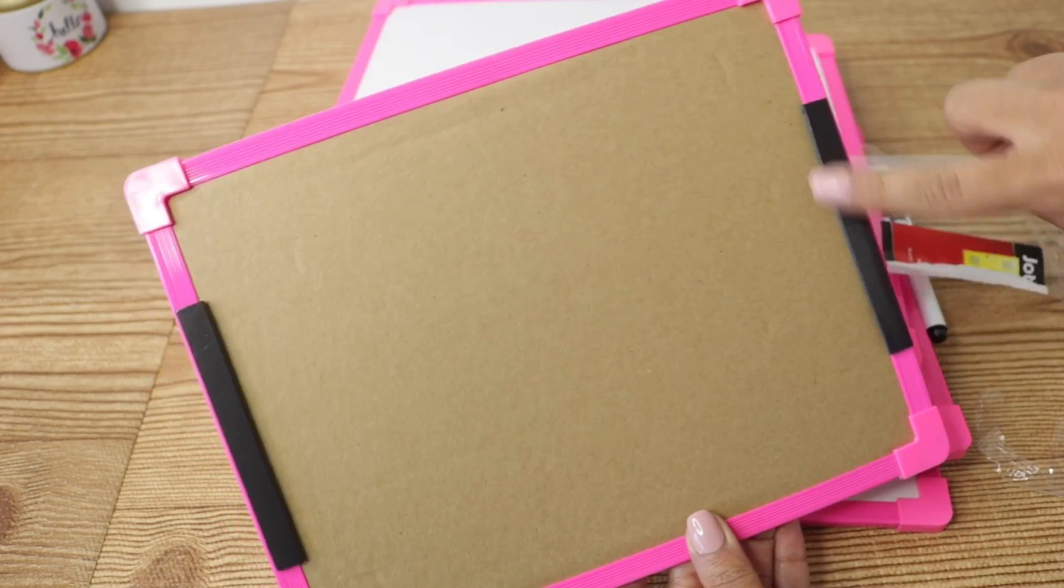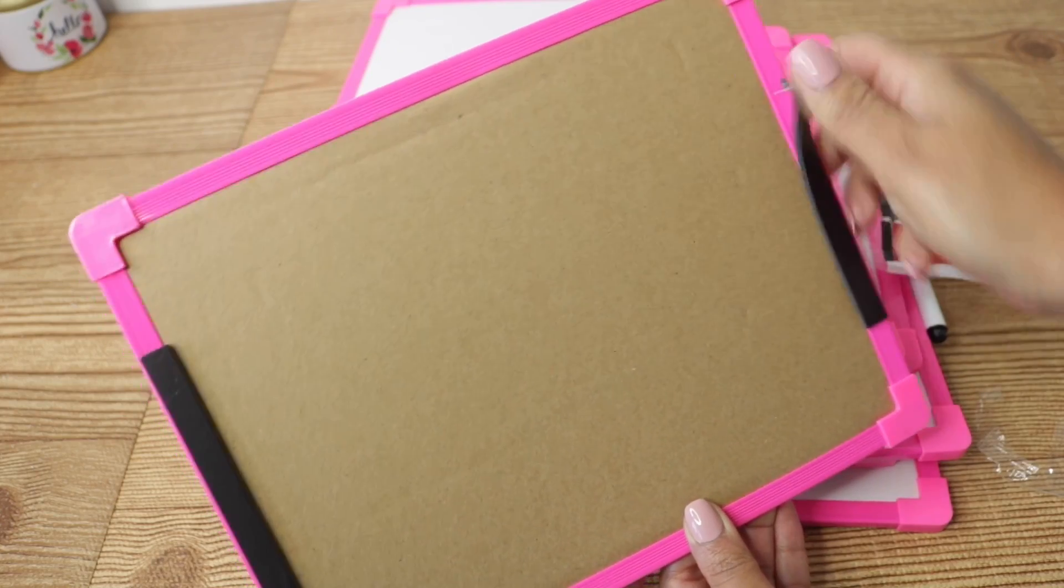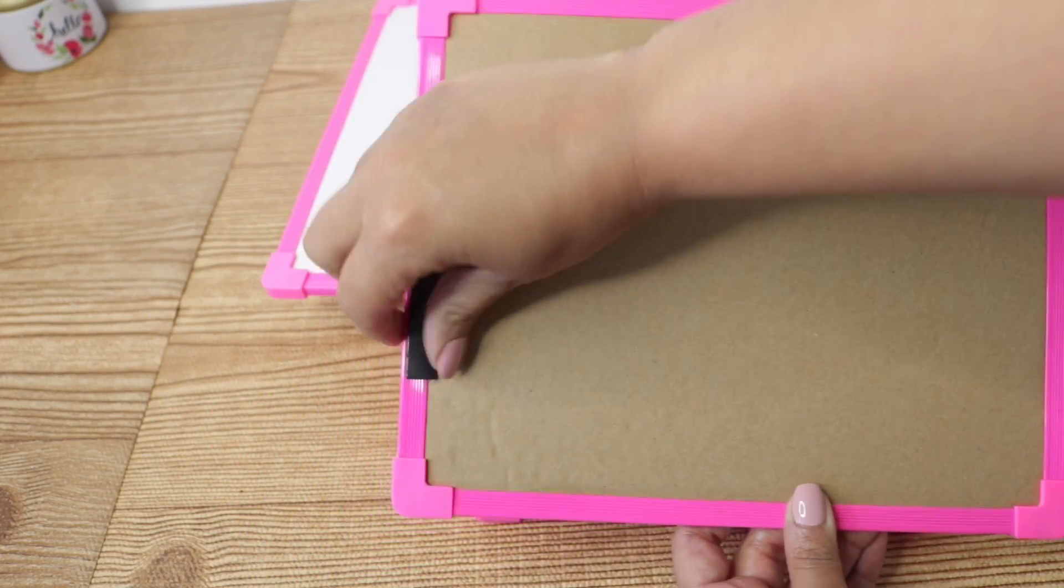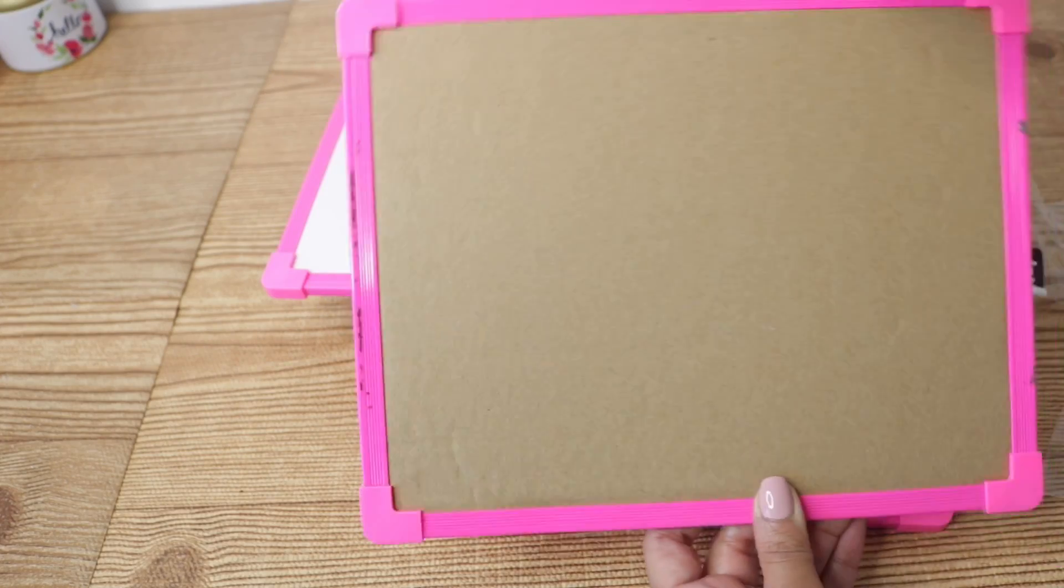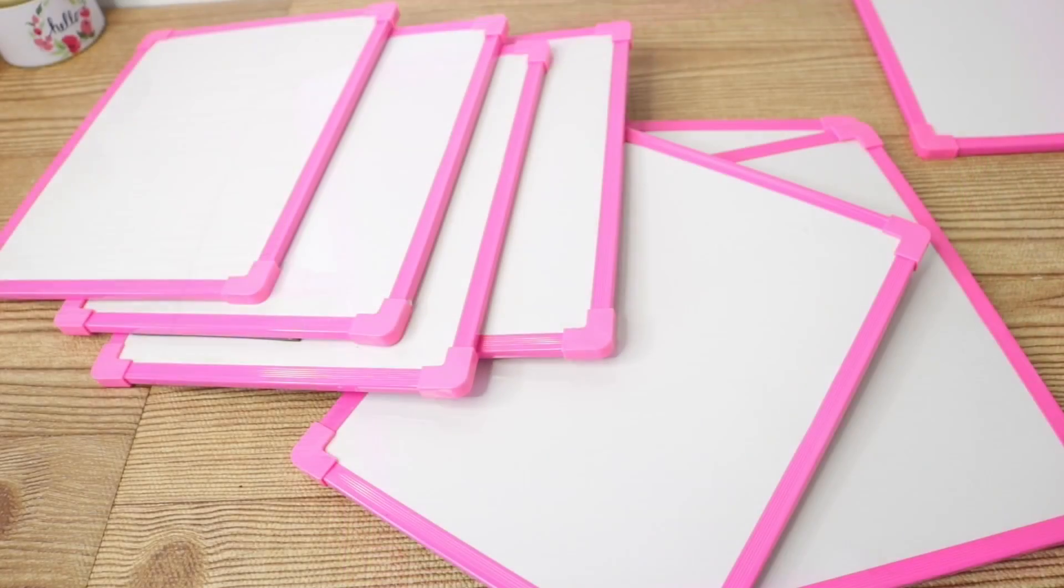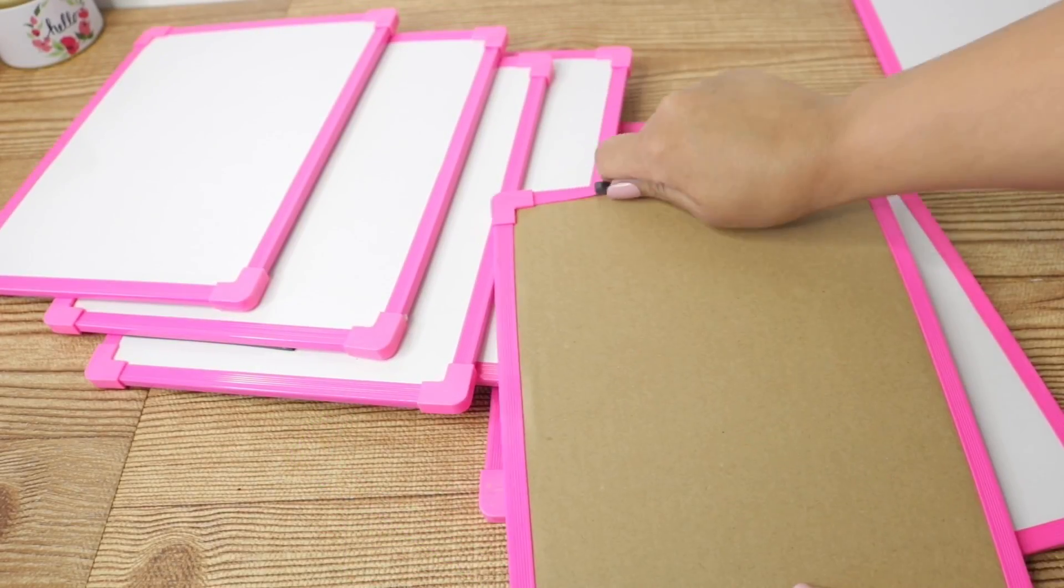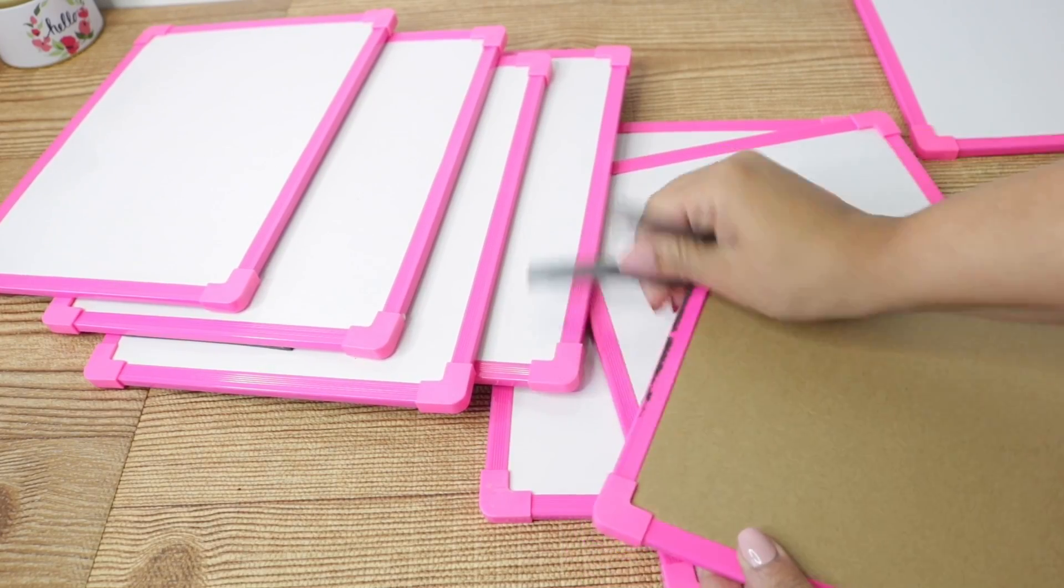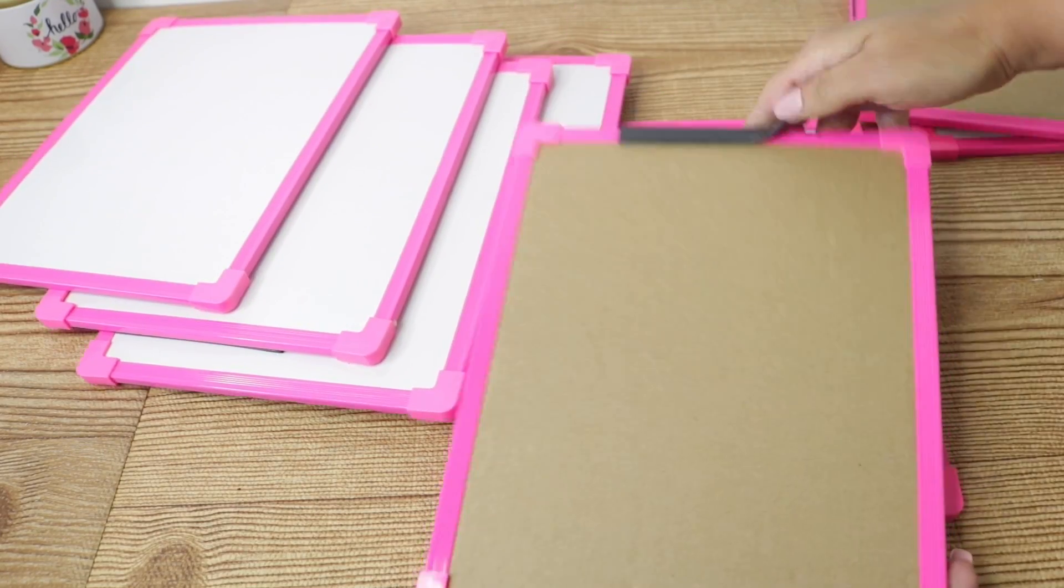They also have magnetic strips. Now if you're putting this on a refrigerator you can totally keep this, but I am going to take these off because I really don't need them and they're just going to create a little bit of bulk to put on my wall. They're really easy to take off and I'm going to do that to all of the frames. If you want, you can go ahead and save those magnetic pieces for other projects.